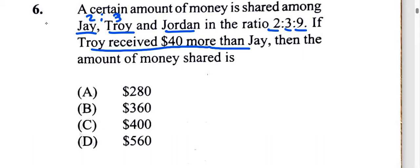So Troy received one part more than Jay, and that one part more equals the $40 more that Troy received than Jay.